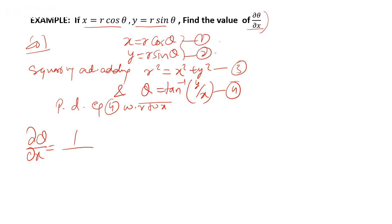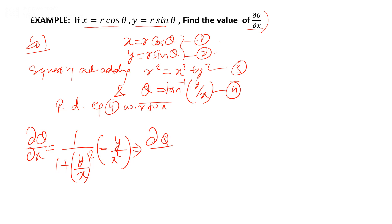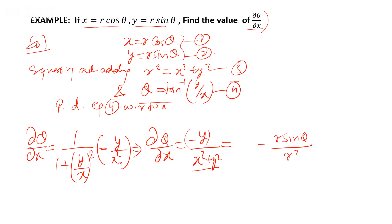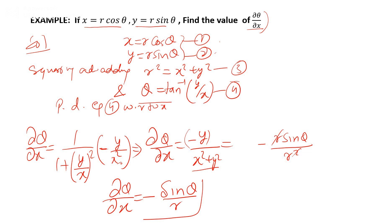Simplifying: ∂θ/∂x = −y / (x² + y²). Since y = r·sin θ and x² + y² = r², this becomes ∂θ/∂x = −r·sin θ / r² = −sin θ / r. So the partial derivative of θ with respect to x is −sin θ / r.